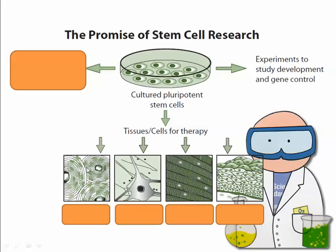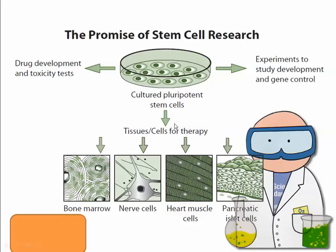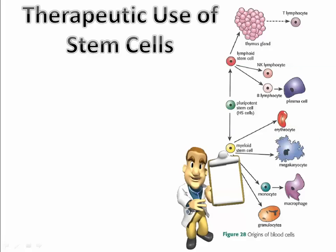Cultured pluripotent stem cells can be turned into large groups of tissues for particular therapies — like heart tissue and pancreatic tissue to help people with diabetes. Specific targets include bone marrow, nerve cells, heart muscle cells, and pancreatic beta cells that produce insulin. Stem cell-derived tissue can also be used for drug development and toxicity testing.